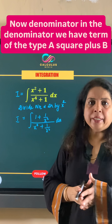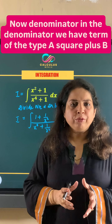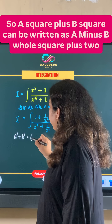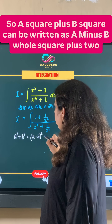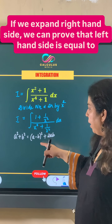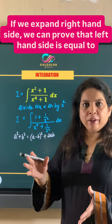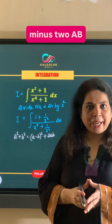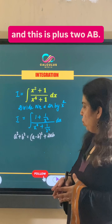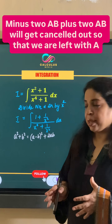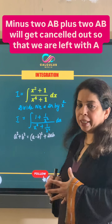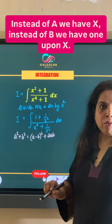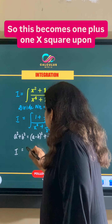In the denominator, we have a term of the type a squared plus b squared. Now, a squared plus b squared can be written as (a minus b) whole squared plus 2ab. Expanding the right-hand side: (a minus b)² equals a² plus b² minus 2ab, and adding 2ab cancels out the minus 2ab, leaving a² plus b² only.